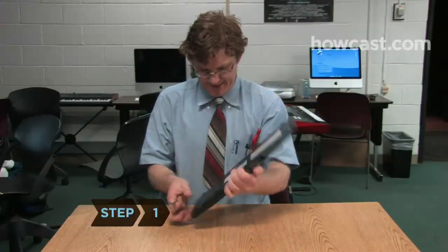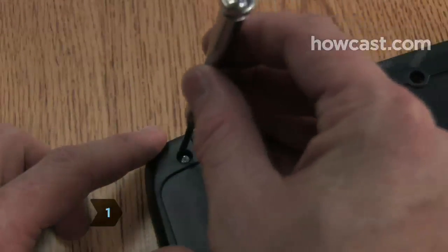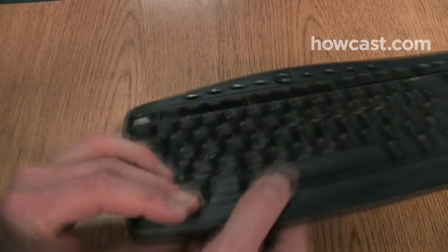Step 1. Flip the keyboard over and unscrew the screws holding it together. Remove the top of the keyboard from the bottom.